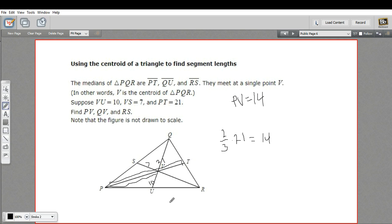Let's try QV. So QV is this length right here. We know that this one is 10, and that's the shorter arm. The longer arm is always going to be twice that, so this is going to be 20. So QV is 20.